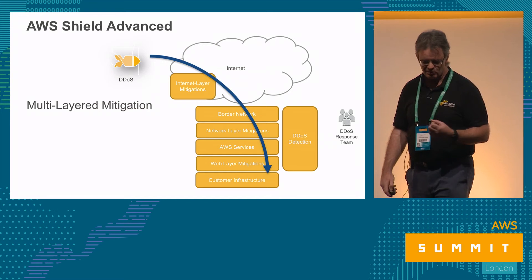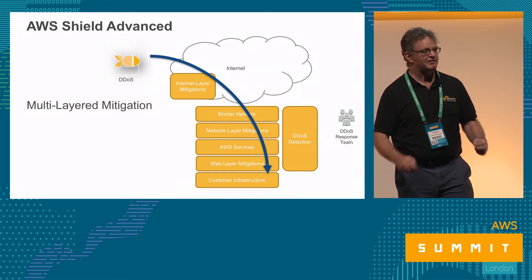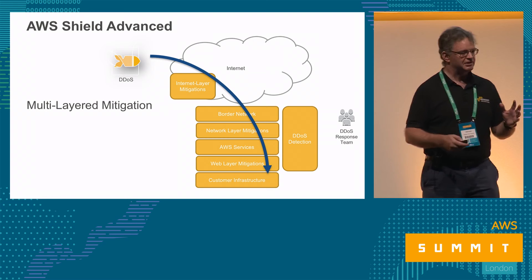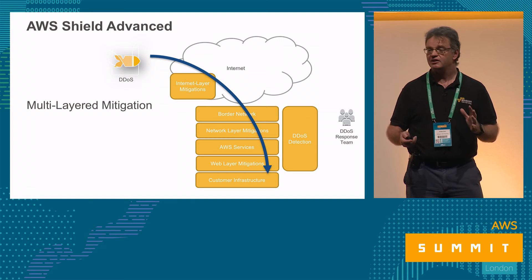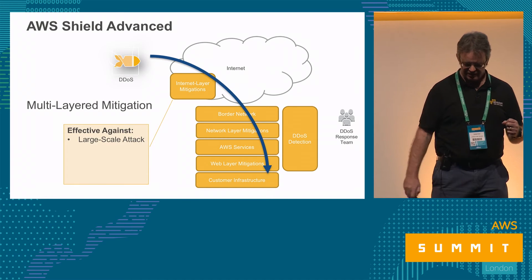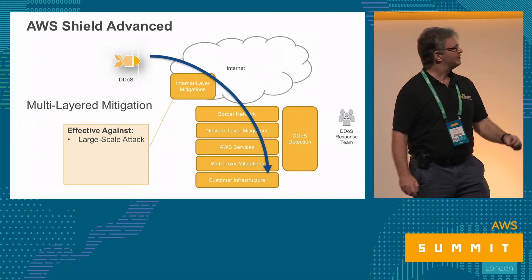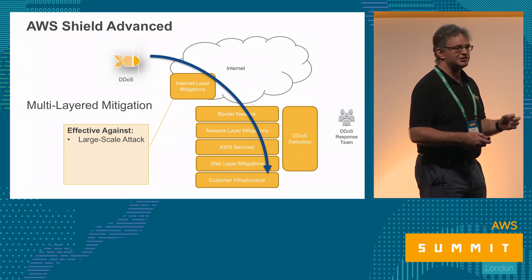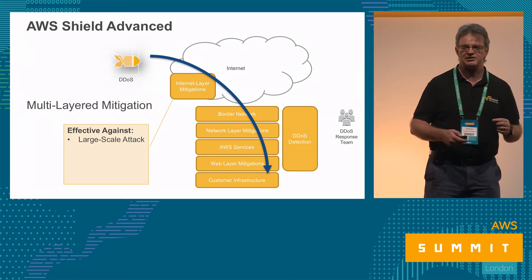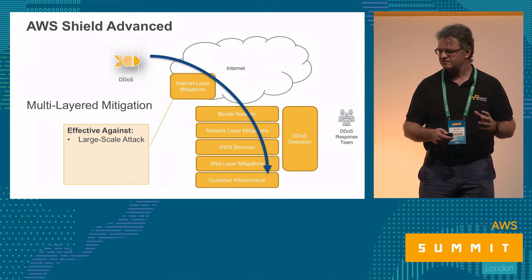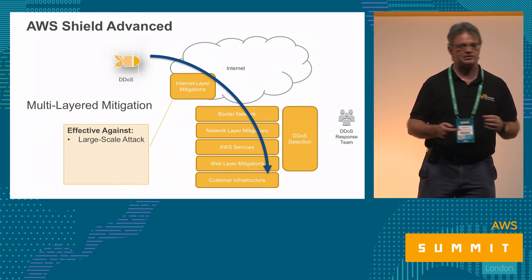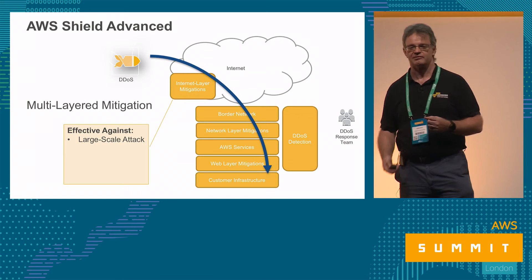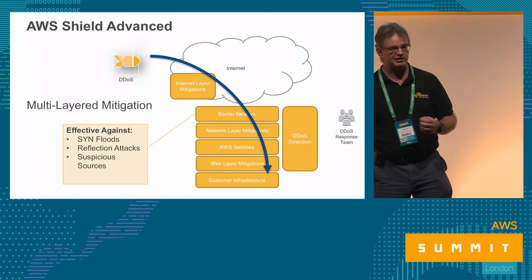AWS doesn't just have one place to do DDoS mitigation — it's done in seven or eight different methods at different points. The first is internet-layer mitigations for large-scale attacks seen in the press: large-scale network engineering techniques are used to move that traffic away so it just doesn't reach the region. That traffic never hits AWS, and everyone benefits — except the hacker.